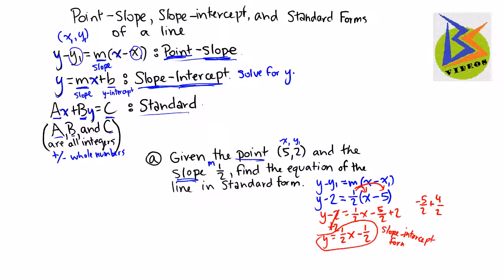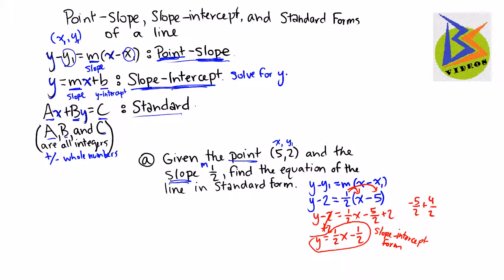And so from here, what we can do is then take it into standard form. So let's go ahead and take y equals 1/2 x minus 1/2. And we are going to get both our x and our y terms on the same side. So I'm going to take this and I'm going to subtract 1/2 x from both sides. So now I have a negative 1/2 x, still a positive y, equals negative 1/2. Now I cannot have any fractions in front of my variables or equaling a fraction. So I need to multiply by the least common denominator.